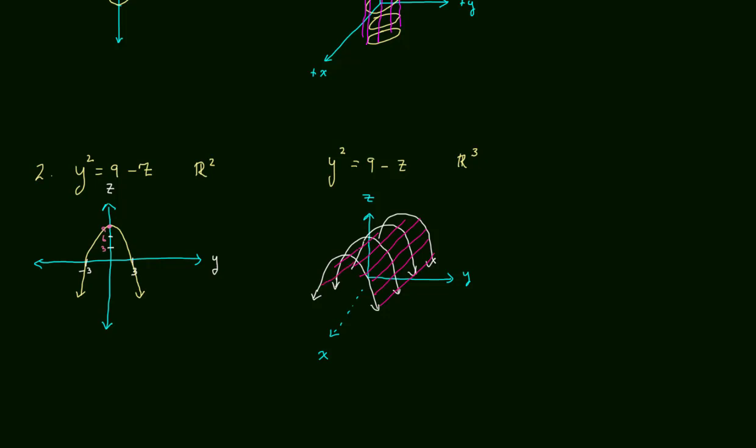And the name of this? Well, it's a parabola and it's a cylinder. So it's a parabolic cylinder with rulings parallel to the x-axis. And again, that's how I'd have you identify it.